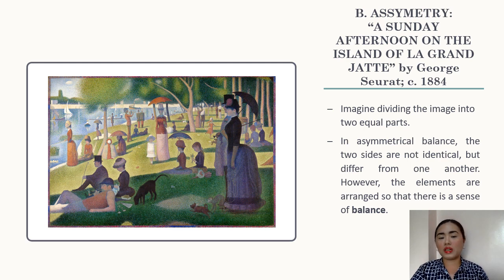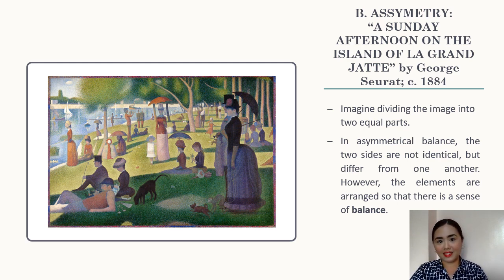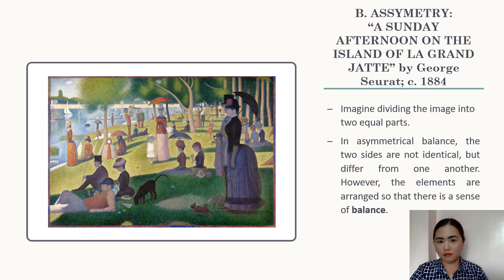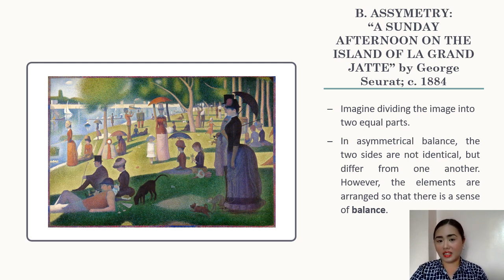The keyword to remember is illusion — it only creates the illusion that both sides are identical. How does it create this illusion? Contrast is the answer. On the left side, there are a lot of elements — many people — but their sizes are small. On the right side, there are fewer elements but their sizes are larger. So there is contrast between the two sides.